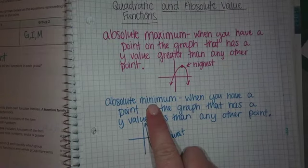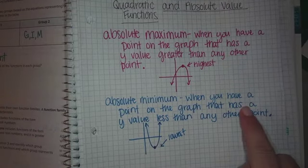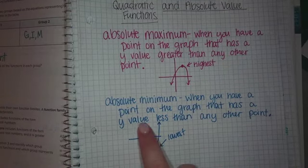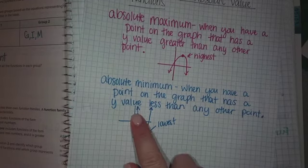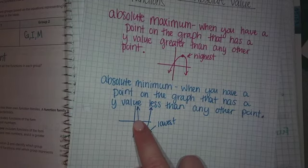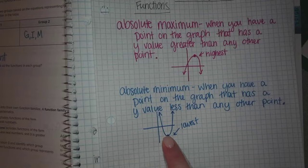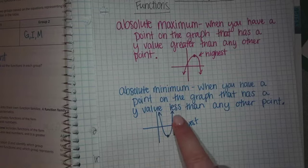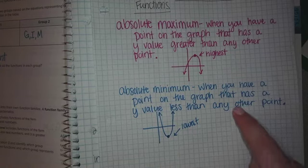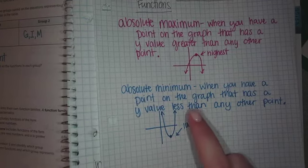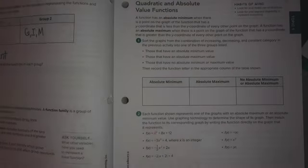An absolute minimum is when you have a point on the graph that has a y-value less than any other point — it's the lowest point. That can be a U-shaped graph, or it can be V-shaped. It's where there's a single point that is lower than all the others.